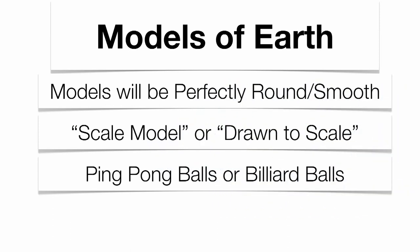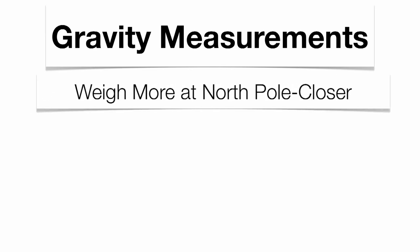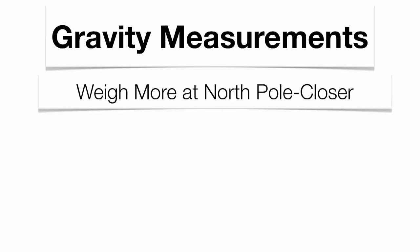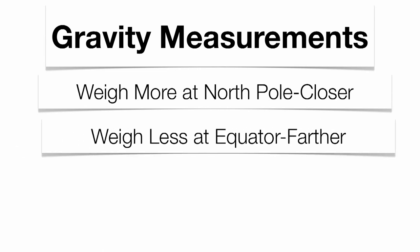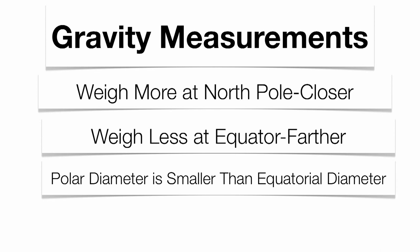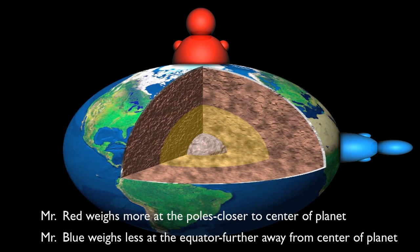Gravity measurements support the idea that the Earth is somewhat oblate in nature. You tend to weigh a little bit more at the North Pole and South Pole because you're closer to the center of the planet. You weigh a little bit less at the equator because you're farther from the center of the Earth. The closer you are to the center of gravity, the more you weigh — the farther away, the less you weigh, only by a fraction of a pound. The distance from North Pole to South Pole is smaller than the distance around the equator, supporting the oblate shape. So Mr. Redd weighs a bit more being technically closer to the center of the planet, while Mr. Blue weighs a bit less being farther from that gravitational attraction.